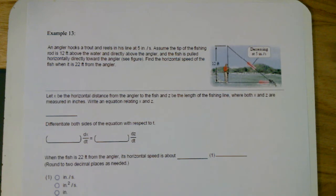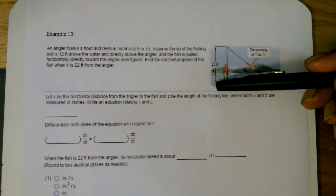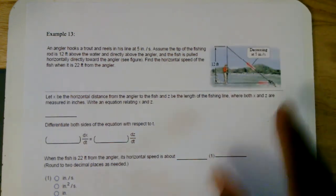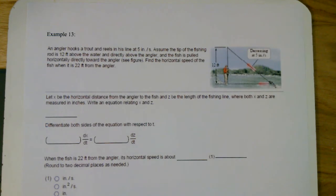It says here an angler hooks a trout and reels in his line at five inches per second. Assume that the tip of the fishing rod is 12 feet above the water and directly above the angler. So here is that distance 12 feet. And the fish is pulled horizontally directly toward the angler. So here's the fish right here that is coming in toward the angler.